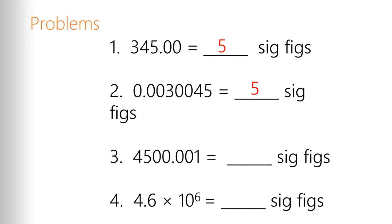Going down to number three. The only zeros involved are in between other numbers, so that means the entirety of it is significant. So that's going to give us a total of seven significant figures.